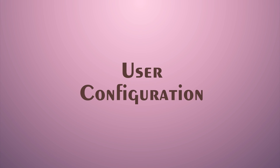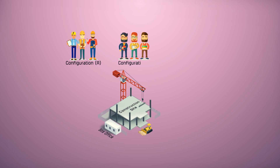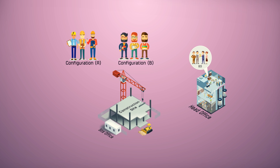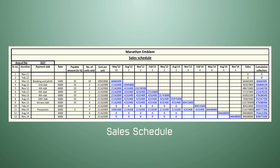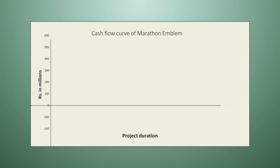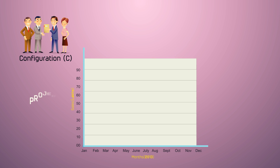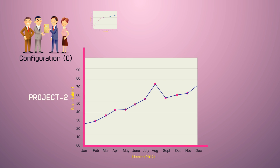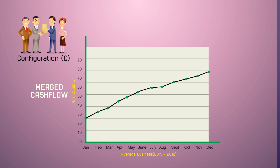The application is categorized into configuration A, which consists of engineers and executives; configuration B of managers; and configuration C, which consists of directors and chairman. For configuration C users, the dynamic cash flow feature uses data from the billing and sales department to analyze and plot cash flow curves, enabling higher management to analyze the net worth of a project at any given point of time. For more than one project, the cash flow curves can be superimposed to give a wider perspective and devise financial strategies.